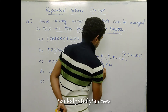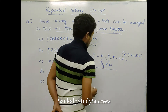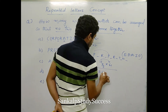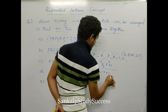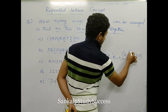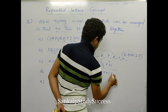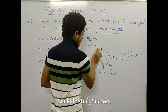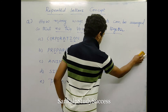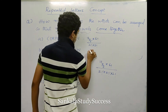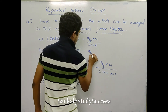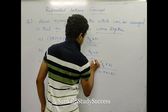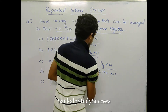For PREPARATION: P repeats 2 times — 2 factorial; R repeats 2 times — 2 factorial; A repeats 2 times — 2 factorial. So the answer is 7P5 into 6 factorial divided by 2 factorial whole cube.